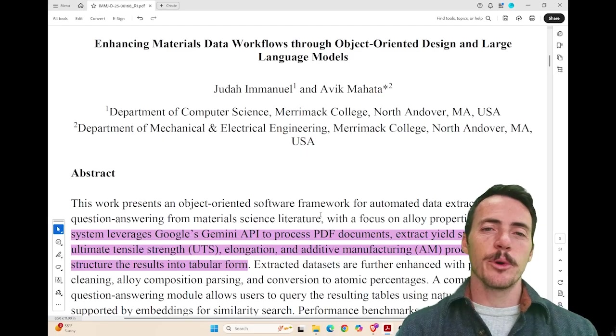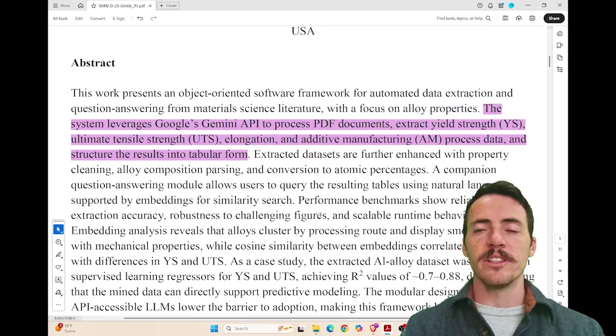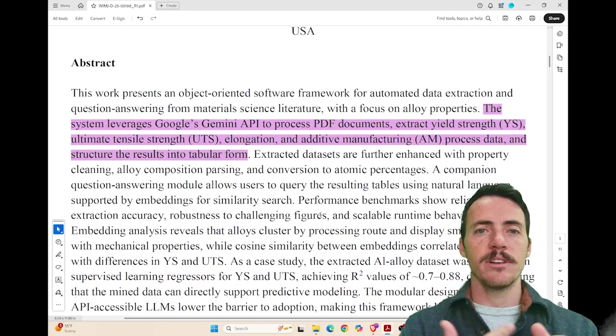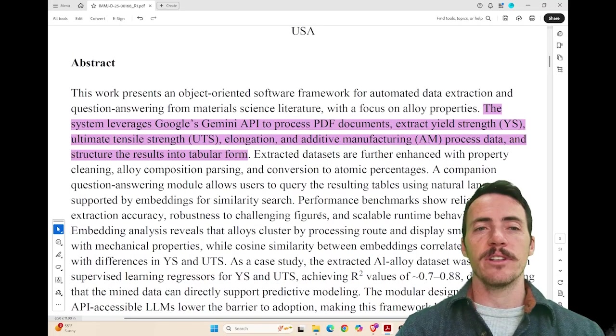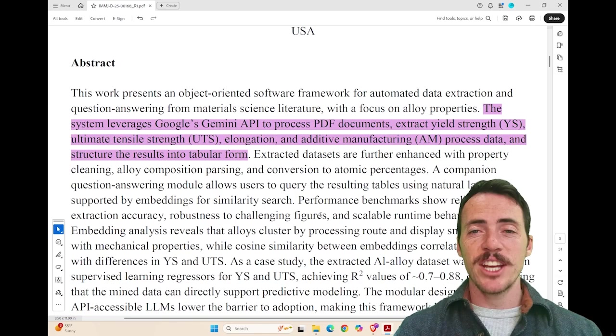This work comes to us from authors Emmanuel and Mahata at Merrimack College. Now, this idea that we're going to pull data out of the literature, what they're working on specifically is getting things like yield strength, tensile strength, elongation from additive manufacturing data. We would love to do that, but it's a challenge.